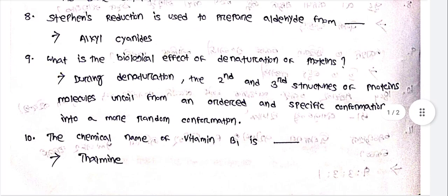The chemical name of Vitamin B1 is Thiamine. Questions about vitamins B1, B2, and similar types are common exam questions.